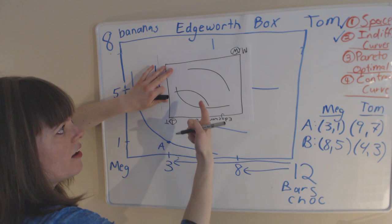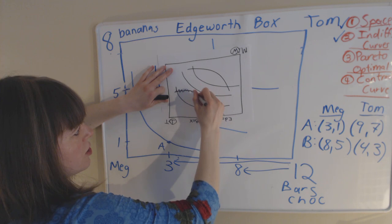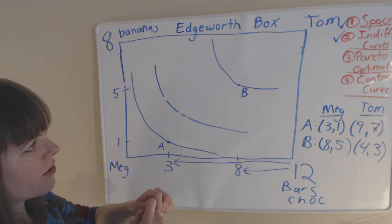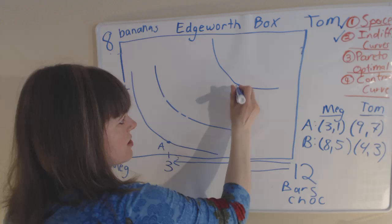So here's a couple of indifference curves for Tom. There's three indifference curves for Tom. And we still have the two indifference curves from Meg. So Tom's indifference curves look normal if he were down here. We just flipped that diagram upside down. So I can draw those on here even though I can't flip this upside down.